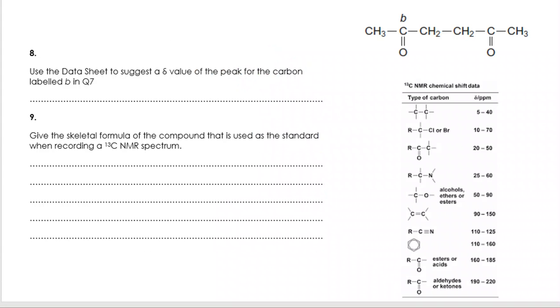Use the data sheet to suggest a delta value for the peak for the carbon labelled B in QZ. We've got to find something that fits this carbon. We can see aldehydes or ketones, RCO. We're going to look at 190 to 220. Give the skeletal formula of the compound that is used as a standard when recording carbon-13 NMR. So this is tetramethylsilane. This time you're asked for skeletal, so Si in the middle and your four bonds going to CH3s there.